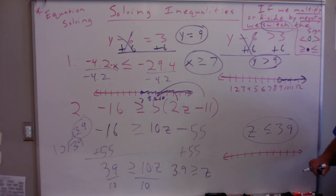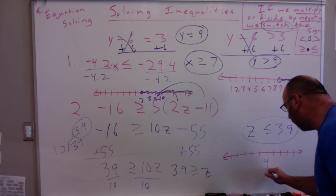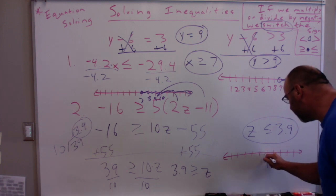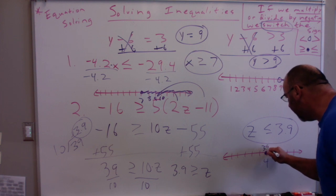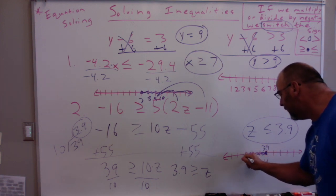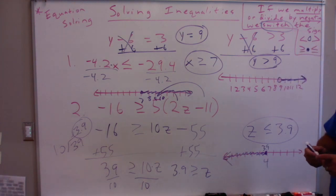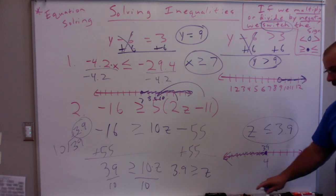Now, if I'm going to graph this, I'm going to have a closed circle. Let's say this is 4. I'm going to have it a little bit less, your closed circle at 3.9. And if it's less than, I'm going to shade it which way? To the left, because everything to the left is less than. So that's a short little lesson on how to solve inequalities.